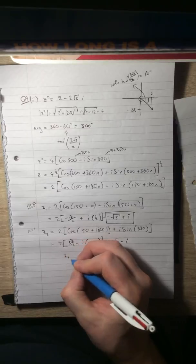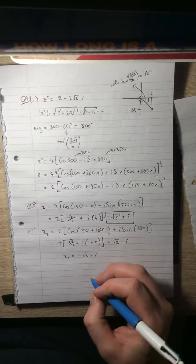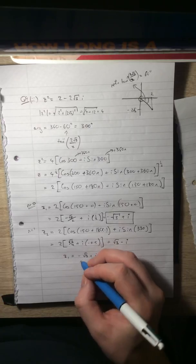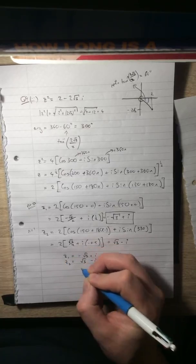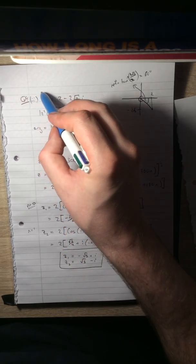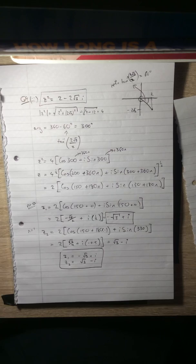So z₁, our first root, is -√3 + i, and z₂ is √3 - i. The two square roots of this number up here.